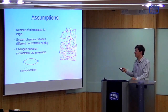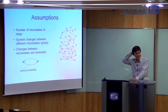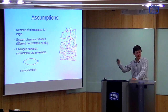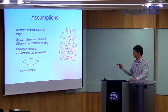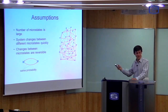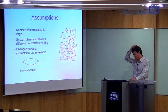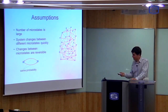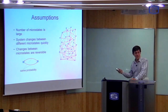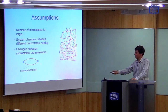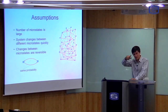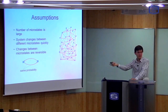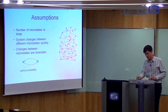We assume that this happens very fast. In a gas, the number of collisions is very, very large — there are millions and millions of collisions every second — so you go through these microstates very, very quickly indeed. Finally, we assume that the changes between microstates are reversible. That means if I started in this microstate and went into this one, it's possible sometime later that I can go back to the original microstate with the same probability.